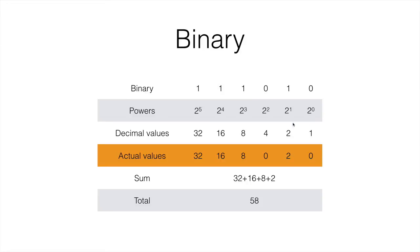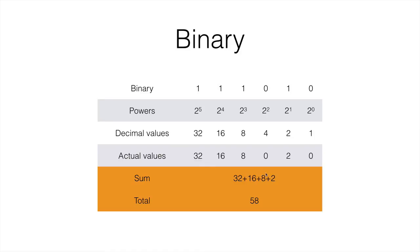The next one is a 0, so we just ignore it. And then 8, 16 and 32. So the sum is 32 plus 16 plus 8 plus 2. The total of that is 58.